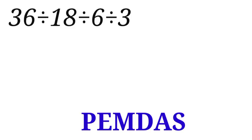In our question here we have division all through, so we will solve this question from the left hand side. We are going to say 36 divided by 18. So 36 divided by 18 gives us 2.